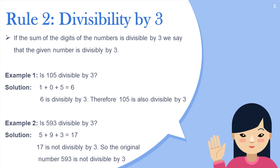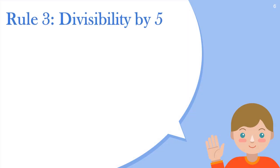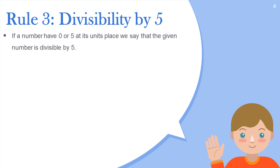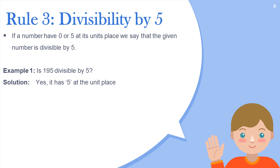Now move to rule number three: divisibility by five. If a number has zero or five at the unit place, we say that the given number is divisible by five. For example, is the number 195 divisible by five? The answer is yes — it has five at the unit place.